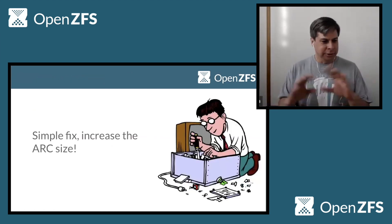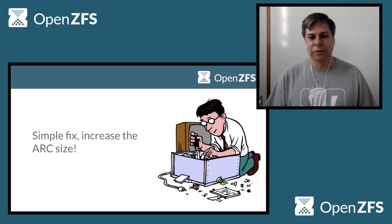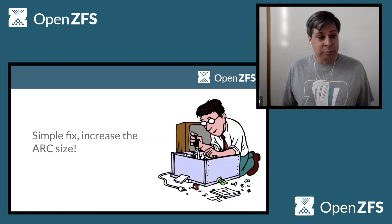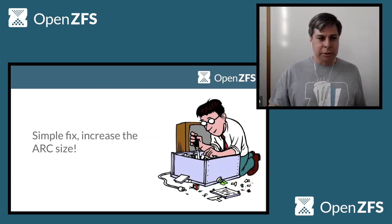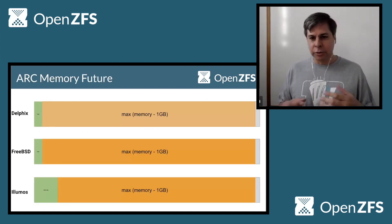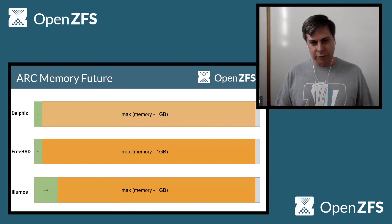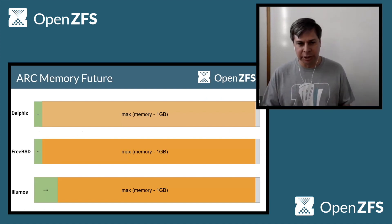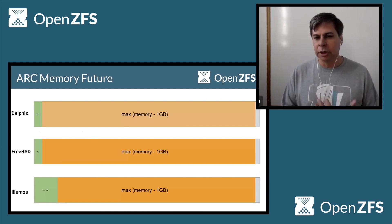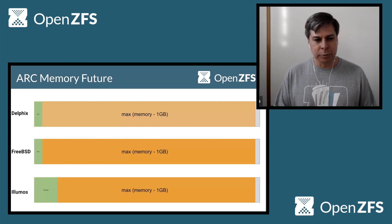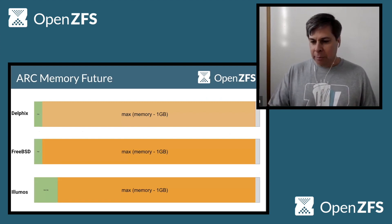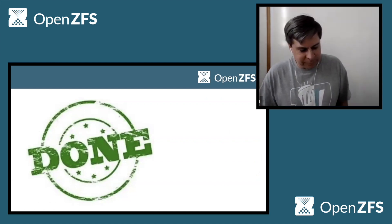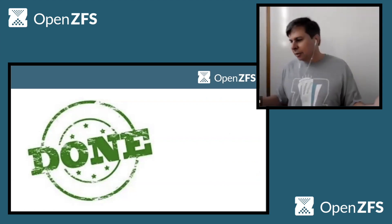No big deal — we're all developers, let's just go in there and make a change, simple fix. And sure enough, it was a simple fix. We actually got it changed, and so now our Delphix platform kind of looks like this, which matches some of the other platforms you may be used to, like FreeBSD and Illumos, that do a similar type of configuration where they're using most of memory. And so great, we were done — and that's the end of my talk. No, sorry, it's not.